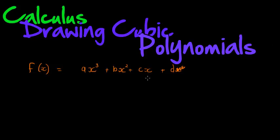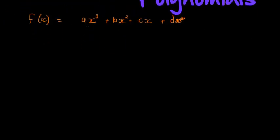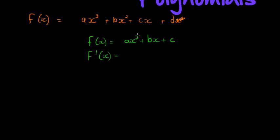Why are we doing cubic polynomials after we've just done the derivative? The reason is that it is very necessary to find the cubic polynomial's turning points. To better understand that, let me briefly go back to the quadratic polynomial — say f(x) = ax² + bx + c. When we take its derivative, we multiply the 2 to the front: 2ax + b.